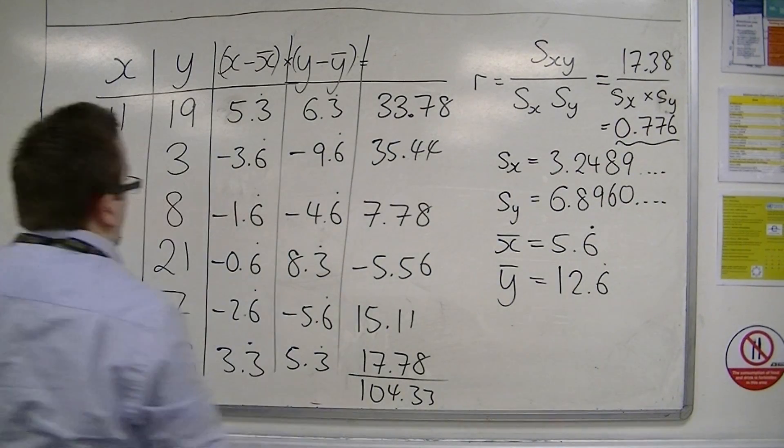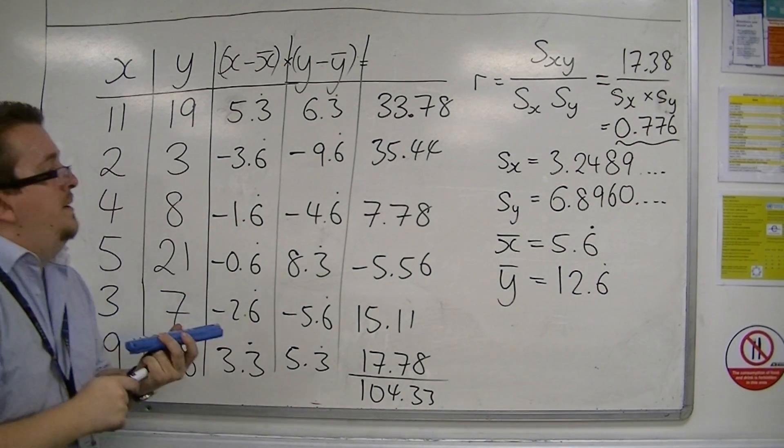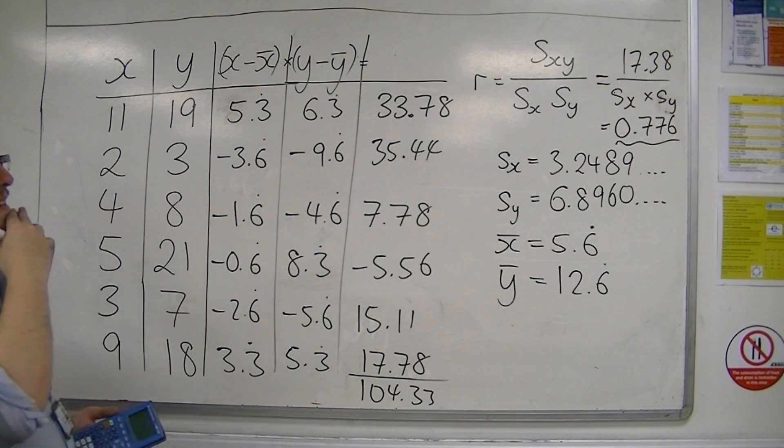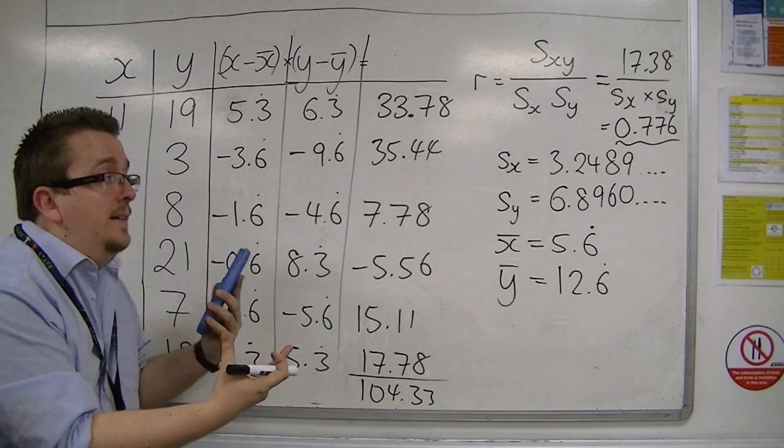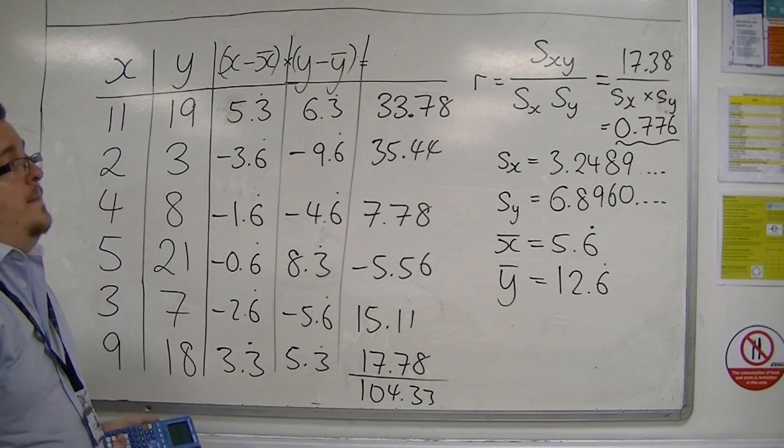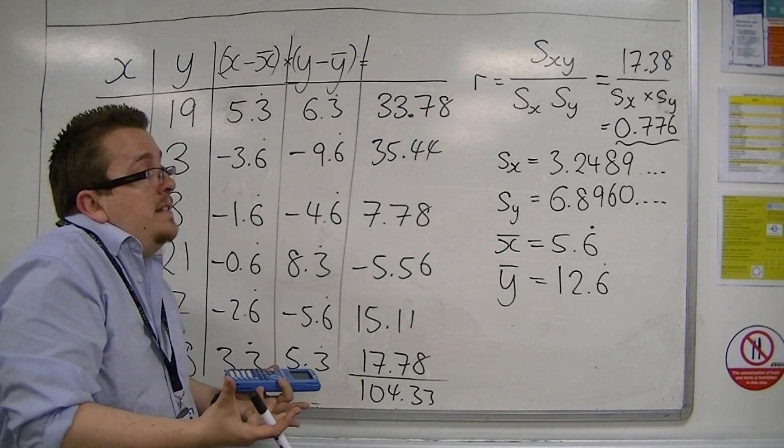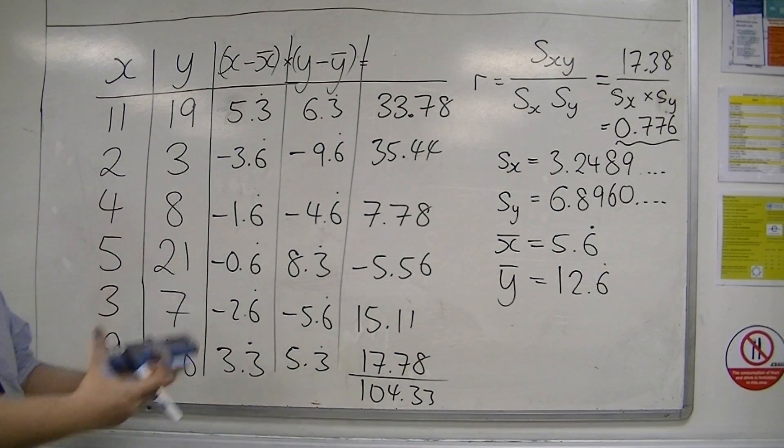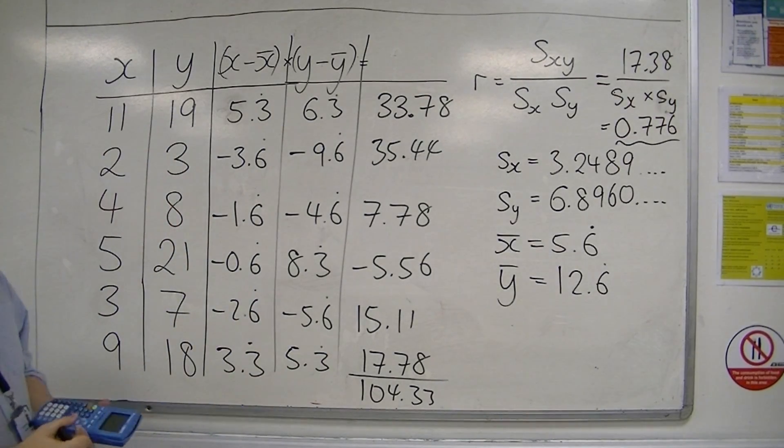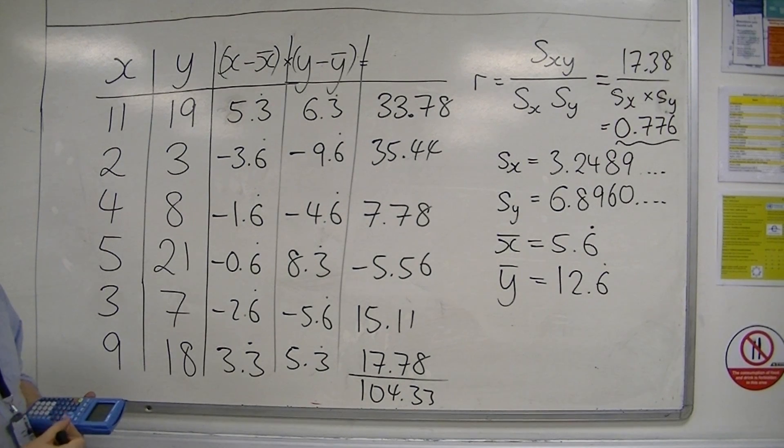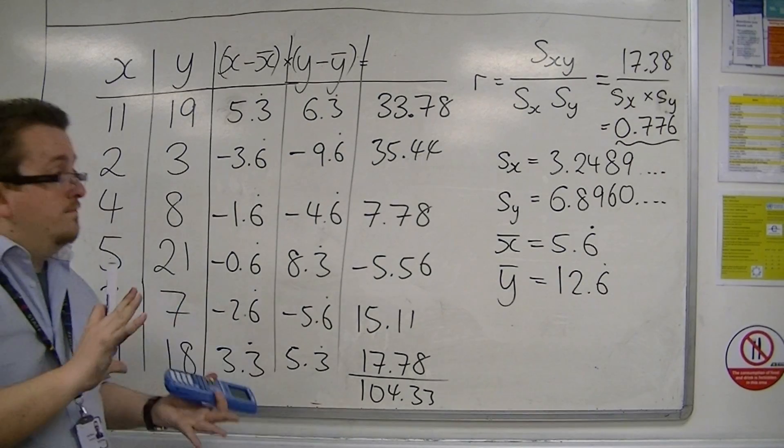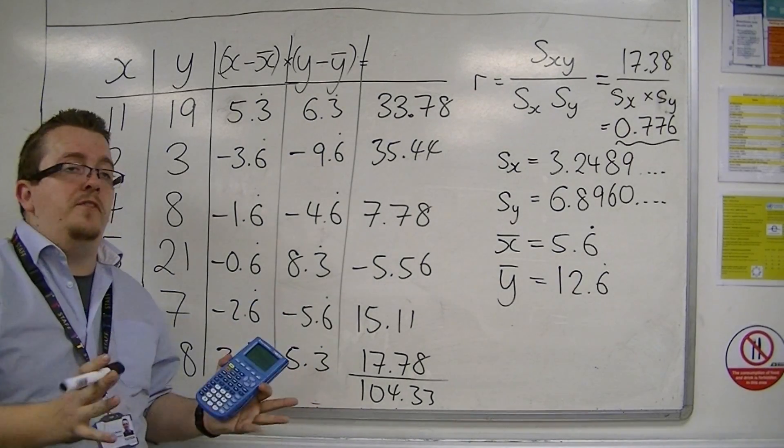I've rounded several times, so it's a bit rough, but 0.776. So that would mean, because it is positive, it's reasonably close to 1, you would have moderately positive correlation. It's veering on being strong correlation, because it's relatively close to 1, and far enough away from 0.5. So I'd probably say strong positive correlation there.